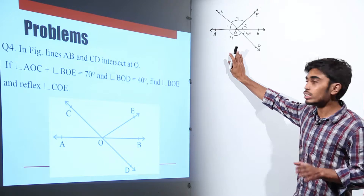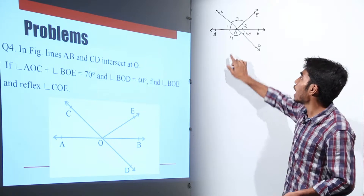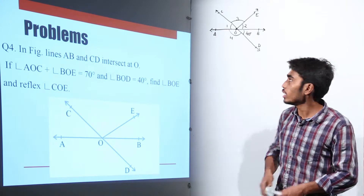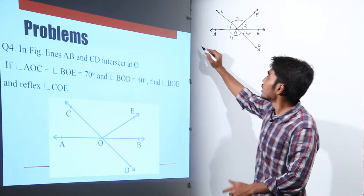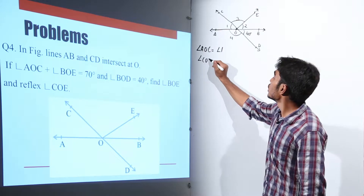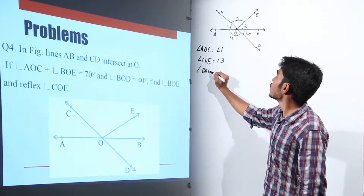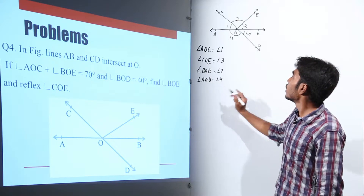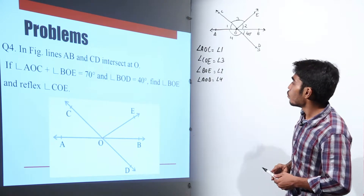Whenever you come across a question on lines and angles, always make sure to mark the angles as 1, 2, 3, and 4 rather than using names like angle COE or AOB. I have marked angle AOC as angle 1, angle COE as angle 3, angle BOE as angle 2, angle AOD as angle 4, and angle BOD is given as 40 degrees.